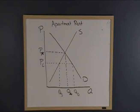If there's a greater quantity demanded than there is quantity supplied, we have a shortage. What that means is that there are people willing to rent an apartment at this price that can't.